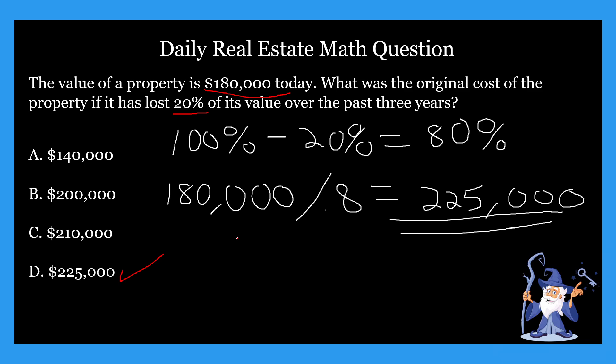So again, it's worth 80% of what it used to be. Once you get that 80%, you could take the value of the property today, and then you could take that number and divide it. And then from there, we're going to be getting our original price.